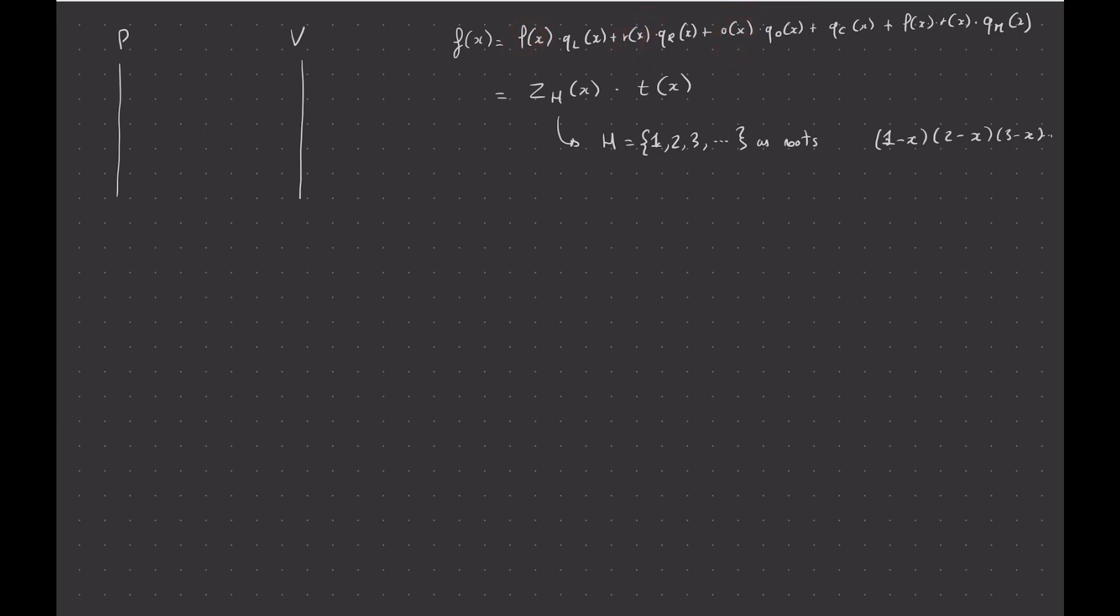And because they knew what was the evaluation point, that random point that the verifier sent, they could form l and r and o to verify this equation at some random point z. So we didn't want that, but we're going to change the protocol now.